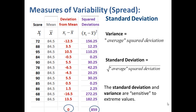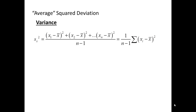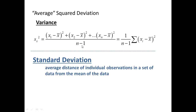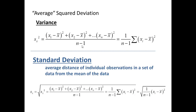The standard deviation and variance are sensitive to extreme values because both include the mean in their calculation, and the mean is sensitive to extreme values. The sample variance, s sub x squared, is calculated by summing the squared deviations of each data value from the mean — (x1 − x̄)² + (x2 − x̄)² + … + (xn − x̄)² — and dividing by n minus 1. The standard deviation is the square root of the variance.